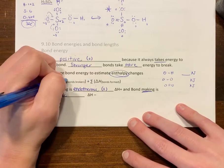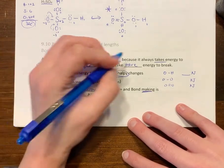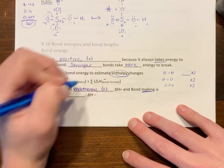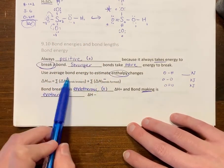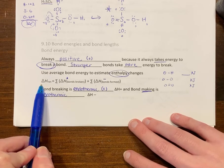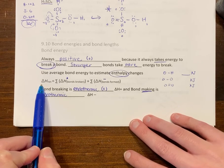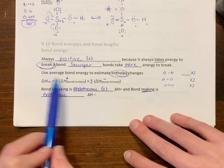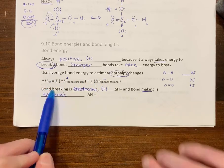Bonds broken are going to be positive and bonds formed are going to be negative. If delta H of the reaction is positive, it's going to require some heat for this reaction to happen. If it's negative, it's going to release heat.